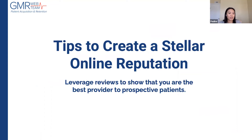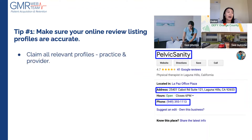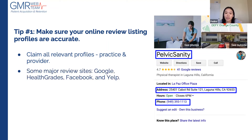Now let's talk about exact tips to create a stellar online reputation. First, make sure your online review listing profiles are accurate, and in order to monitor and generate more reviews, you need to claim your listings. A lot of practices don't have all their review listings claimed. On Google you can have one for your individual PTs plus one for the practice itself. If you're the owner, you want to make sure you have your own individual Google My Business listing too, because doctors or patients might refer to your name specifically.